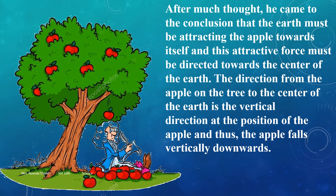He was thinking about why it was happening that way. He came up with the conclusion that there is a particular force present in the earth itself — the earth is attracting all objects towards its center. This center attracts things towards itself, and that is why whenever anything falls, it falls straight vertically downwards. The direction from the apple on the tree to the center of the earth is the vertical direction, and thus the apple falls vertically downwards.